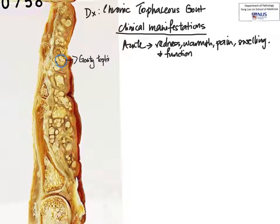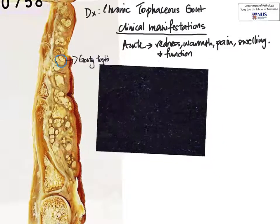Clinically, what the doctors would do, especially if there is a joint effusion because of acute gouty arthritis, is that usually there will be a lot of fluid in the joint space which they will aspirate with a needle and send to the pathologist for examination. We look under polarized light microscopy — which is why you can see the whole background here is dark — for these needle-shaped crystals. These are all uric acid crystals, and if you use a special filter, we can actually see that they are negatively birefringent. So this clinches the diagnosis of gout.